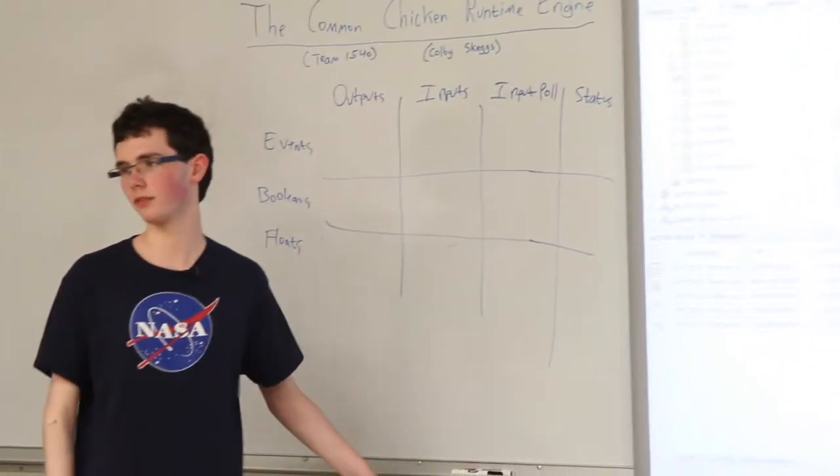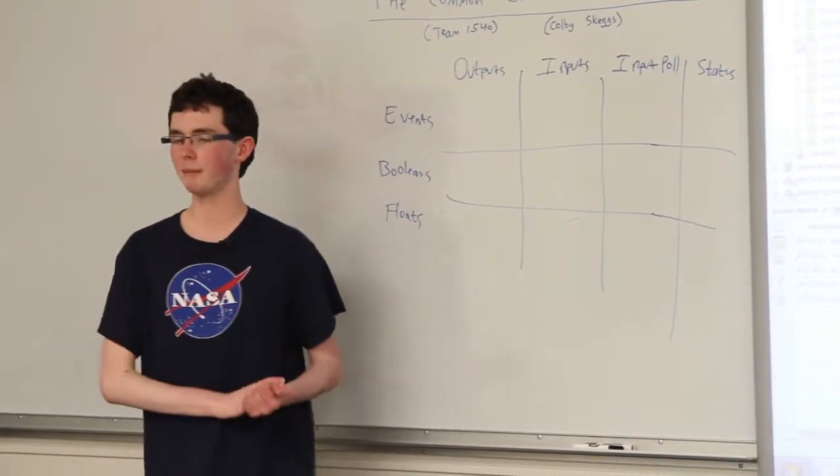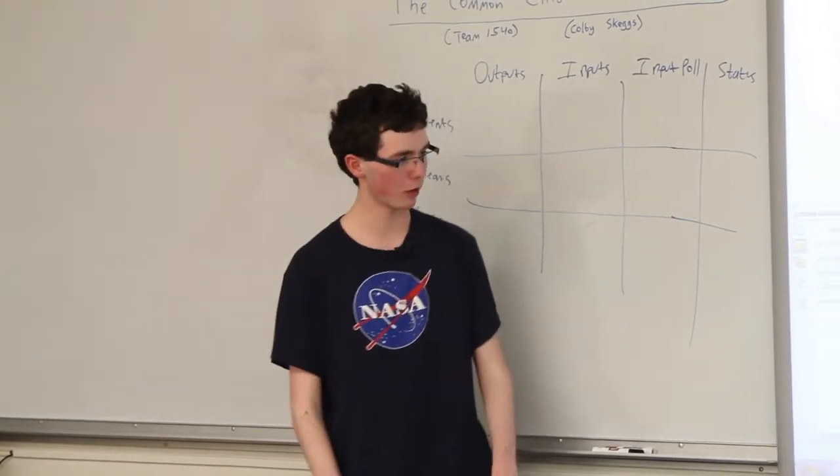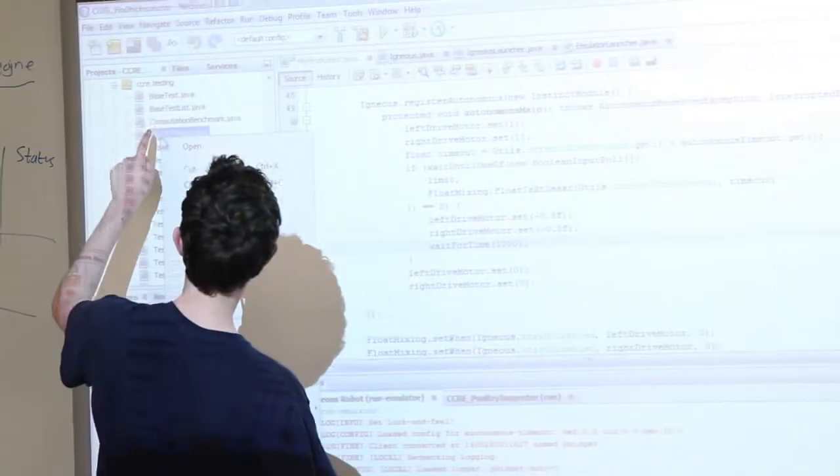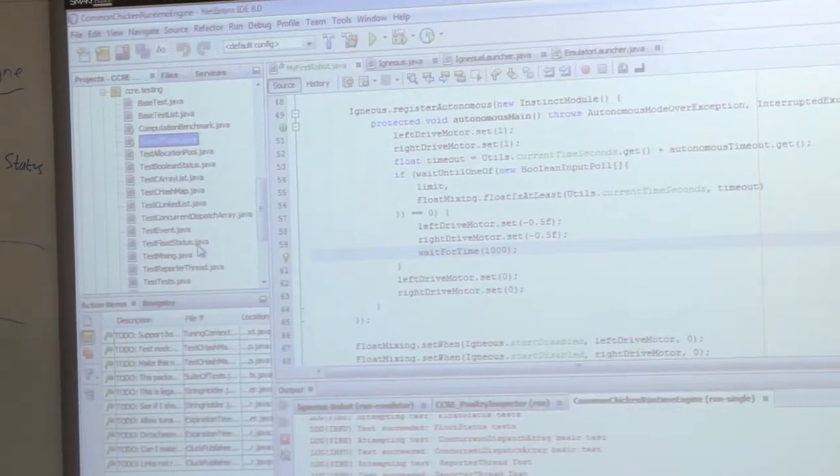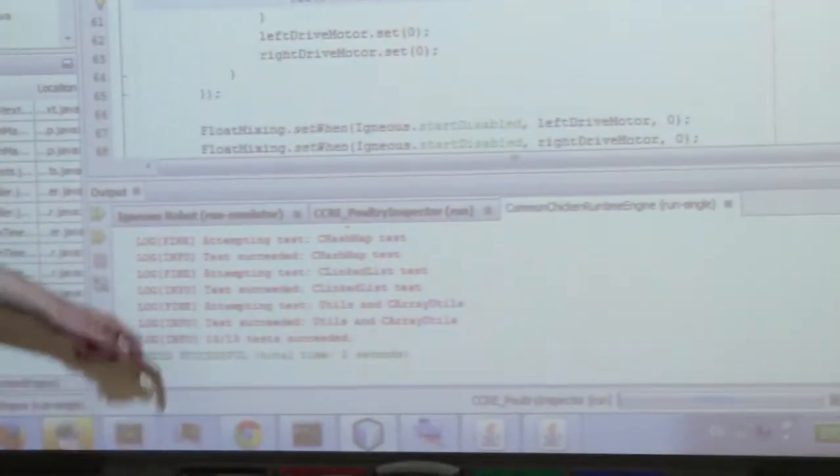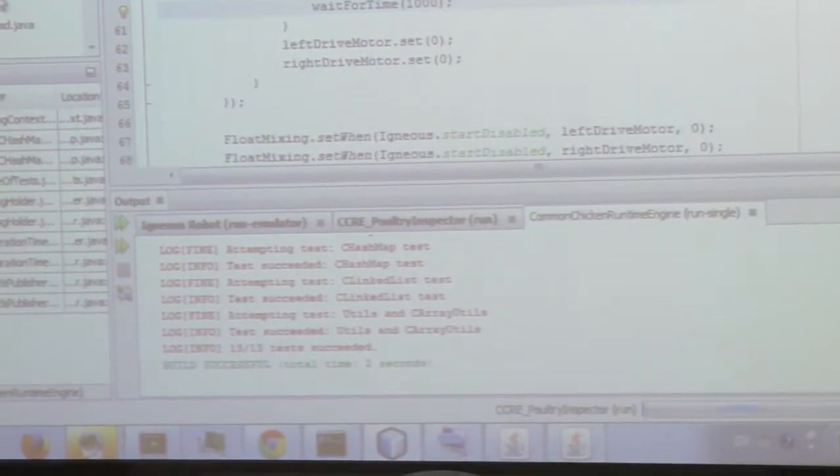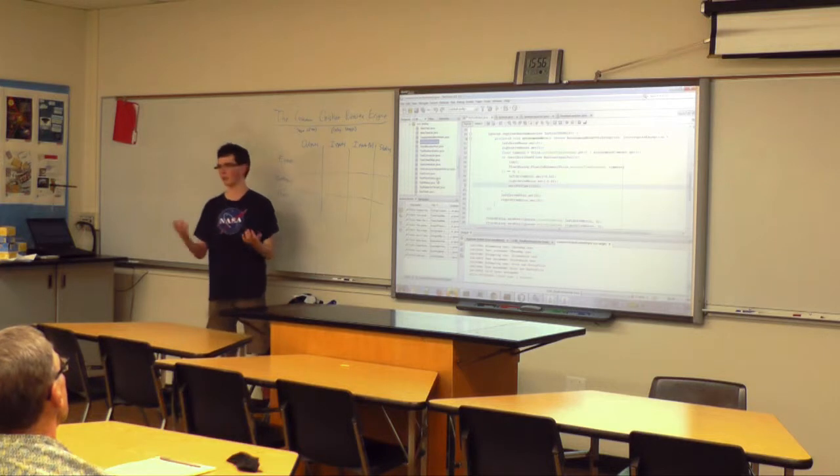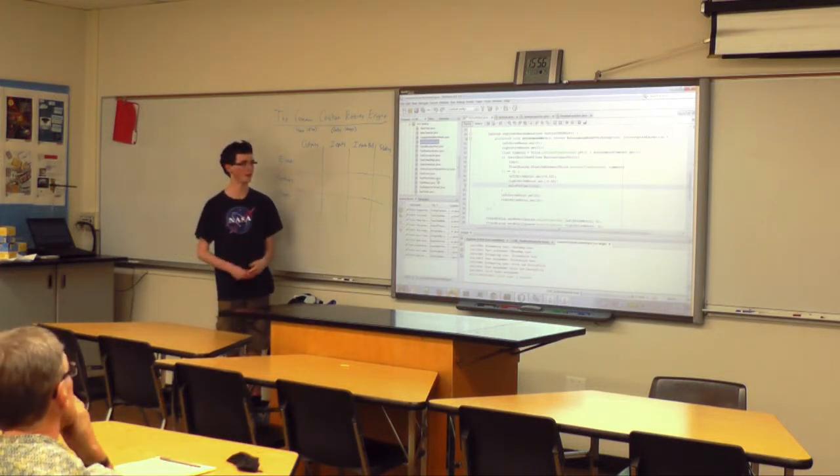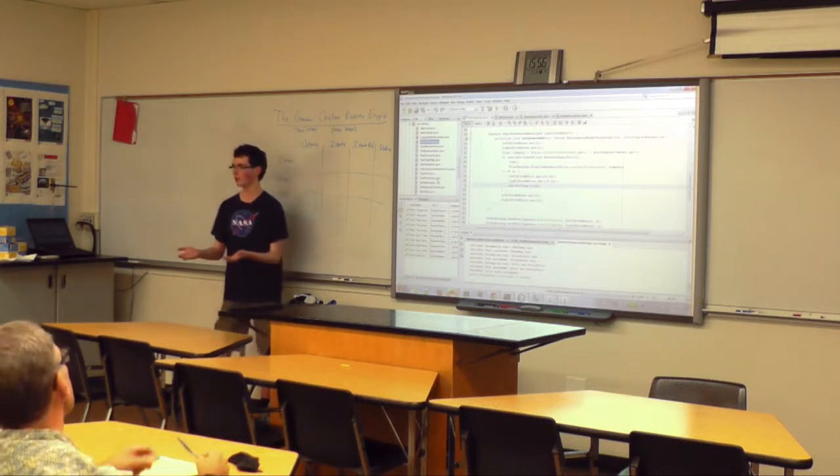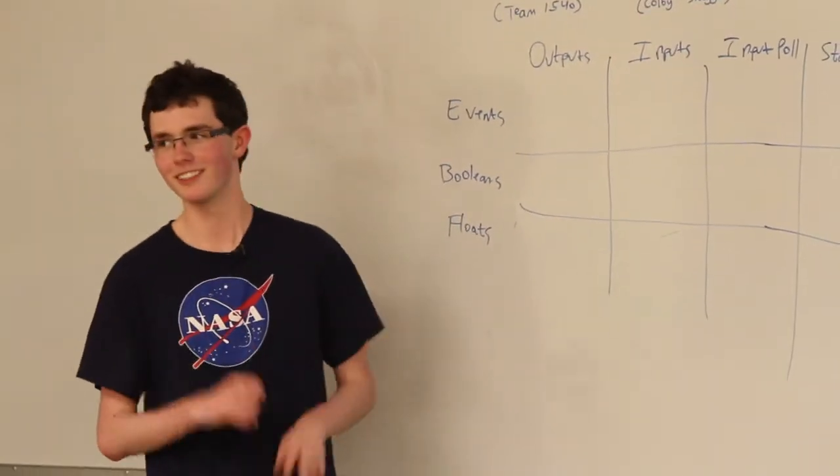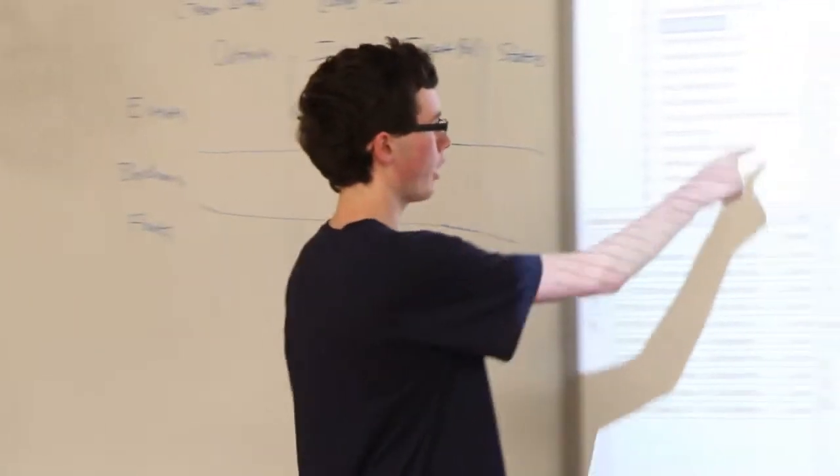There is a unit testing system as part of proving to people that our code actually won't break down in the middle of a match. We have some unit tests for parts of our system. I can just go and say run tests. 13 out of 13 tests succeeded. That tests all the really important systems like the collection systems and all the statuses, some of the mixing and remixing of channels. It verifies that a lot of that all works.